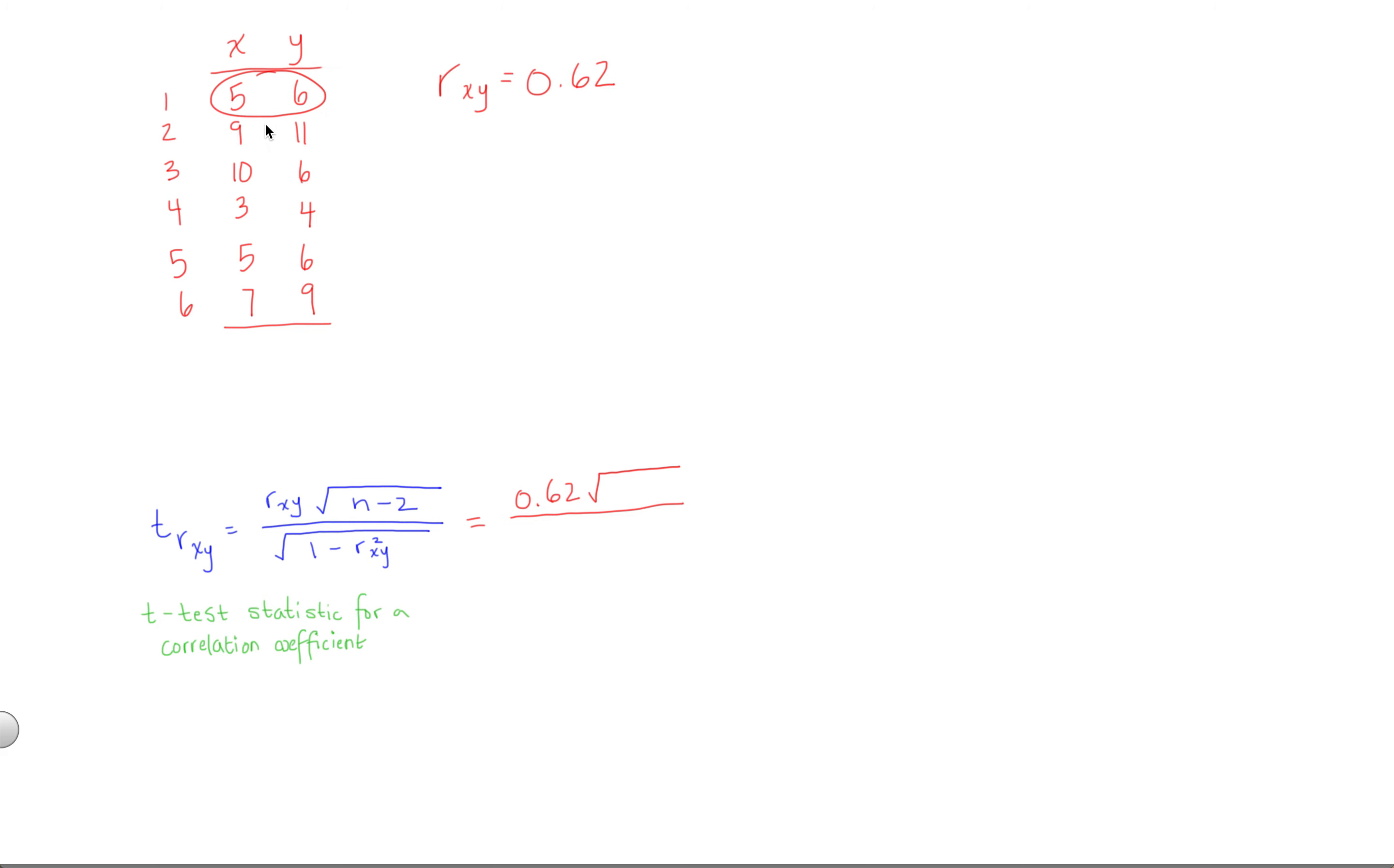Here's Bob's data, for example. Here's Sally's data. Here's Ann's data, and so on. So, we have 6 minus 2. In the denominator, we have the square root of 1 minus our correlation squared, 0.62 squared.